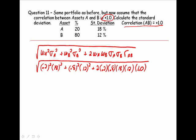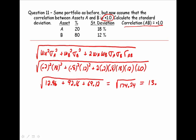Underneath this radical, we have 12.96, we have 92.16, and we've got 69.12. Giving us a sum, 174.24. Taking the square root, the standard deviation of the portfolio is 13.2.